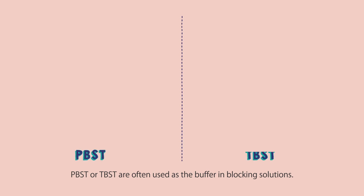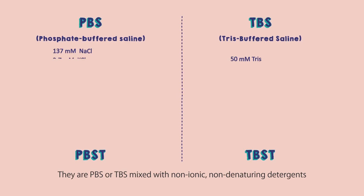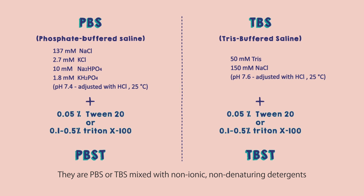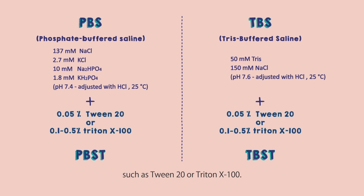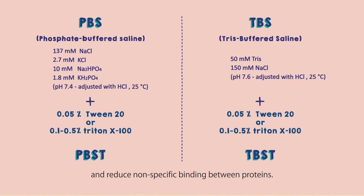PBST or TBST are often used as the buffer in blocking solutions. They are PBS or TBS mixed with non-ionic, non-denaturing detergents such as Tween 20 or Triton X-100. PBST and TBST can interfere with hydrophobic interactions and reduce non-specific binding between proteins.